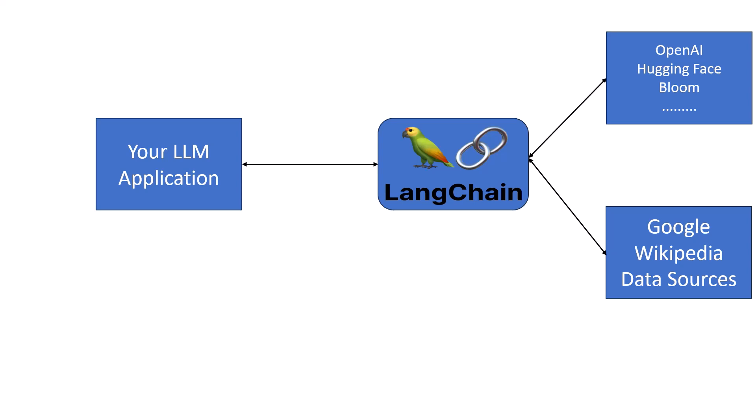If I want to save cost I can use Hugging Face; if I have the budget I can use GPT 3.5 or GPT 4 — and my code should remain the same. Plus, this framework should also provide integration with Google Search and Wikipedia so I can get real-time information, and it should also integrate with my own organization data or custom data sources, so the application can pull data from various sources.